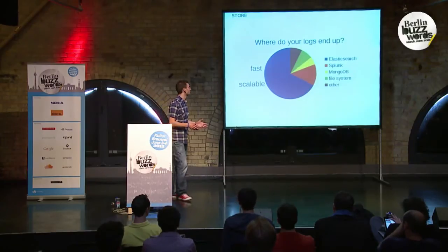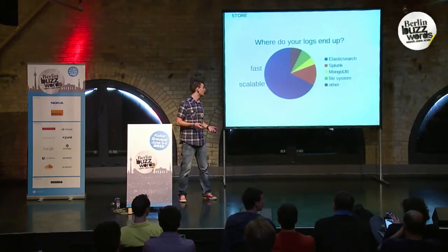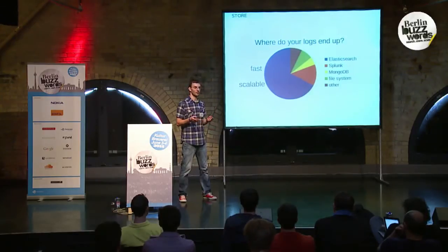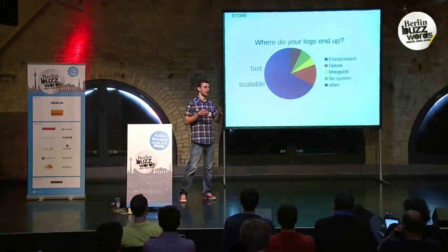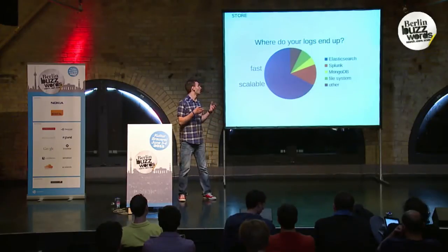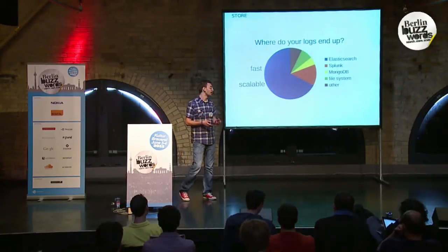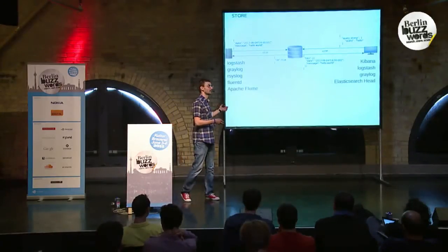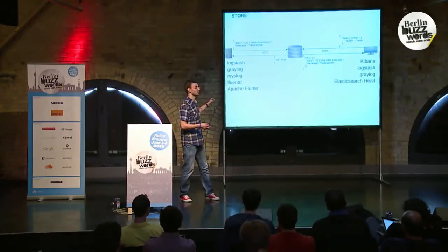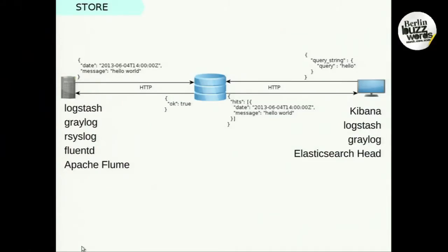Earlier this year we did a poll where we asked DevOps people: if you centralize your logs, where do your logs end up? And most of them said Elasticsearch. I think the reason Elasticsearch is so popular for storing logs is that it's fast and it's scalable. Another reason is because there are lots of tools that can help you do that — you might recognize some of them here.